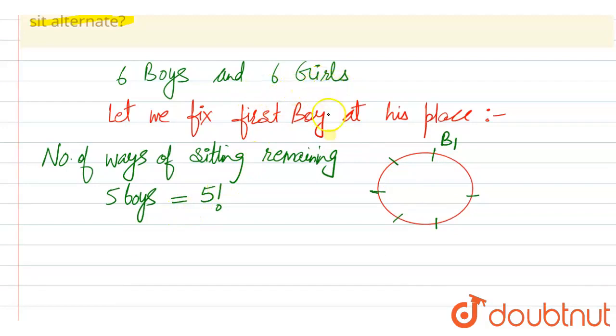set the girls between the boys like this. So between the boys we have one, two, three, four, five, six - six spaces.